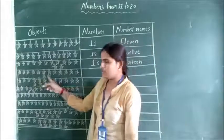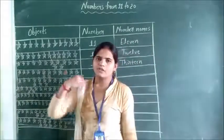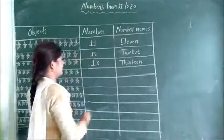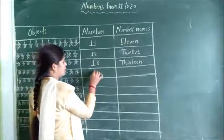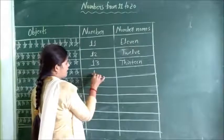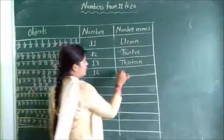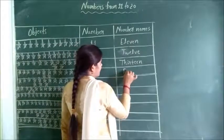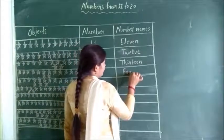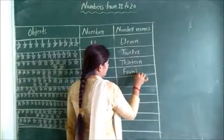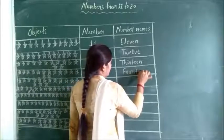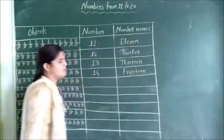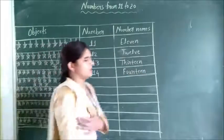14. Next. So we have to write here: 1, 4 — 14. F, O, U, R, T, E, E, N. Fourteen. 14.